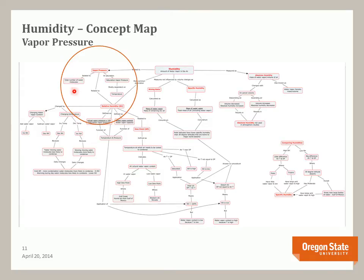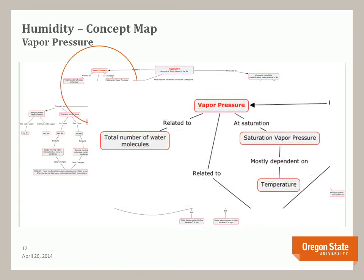Now let's look at vapor pressure, which is also related to another measure called relative humidity. The total air pressure of a gas is the sum total of all the pressures of all gases. For humidity, the water vapor pressure is related to the total number of water molecules — more water molecules means higher vapor pressure. When the air cannot take any more water molecules it is saturated, and the vapor pressure at that point is called the saturation vapor pressure. Vapor pressure is measured in pascals, millibars, or inches of mercury. The saturation vapor pressure is mainly a function of temperature.